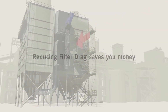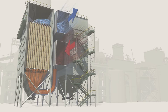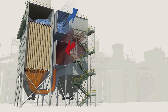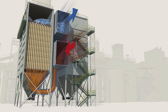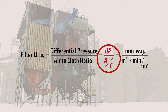Filter drag. Reducing it saves you money. By definition, it is the total resistance to the airflow in your bag house caused by the combination of the filter media and the dust on or in the filter media. Higher resistance results in lower operating efficiency and higher costs for your bag house. This formula breaks it down: filter drag equals differential pressure divided by air to cloth ratio. Simply put, it is the amount of force or energy it takes to move air through the bag house.